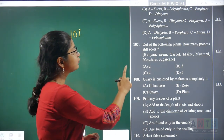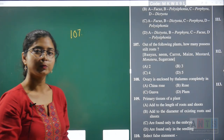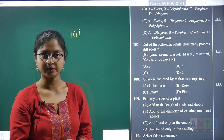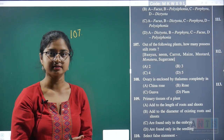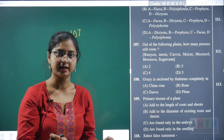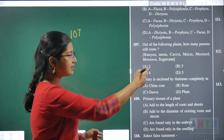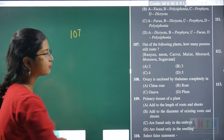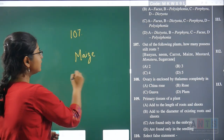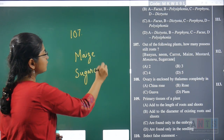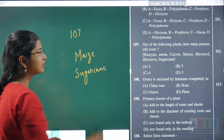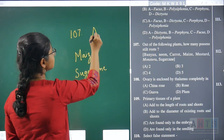Question 107: out of the following plants, how many possess stilt roots? Stilt roots are a specific type of adventitious root that provide mechanical support to the entire plant axis — unlike prop roots, which support a specific branch. In this list, two plants possess stilt roots: maize and sugarcane. In both, stilt roots arise from the lower nodes of the stem. Hence, the correct answer is option A — two.